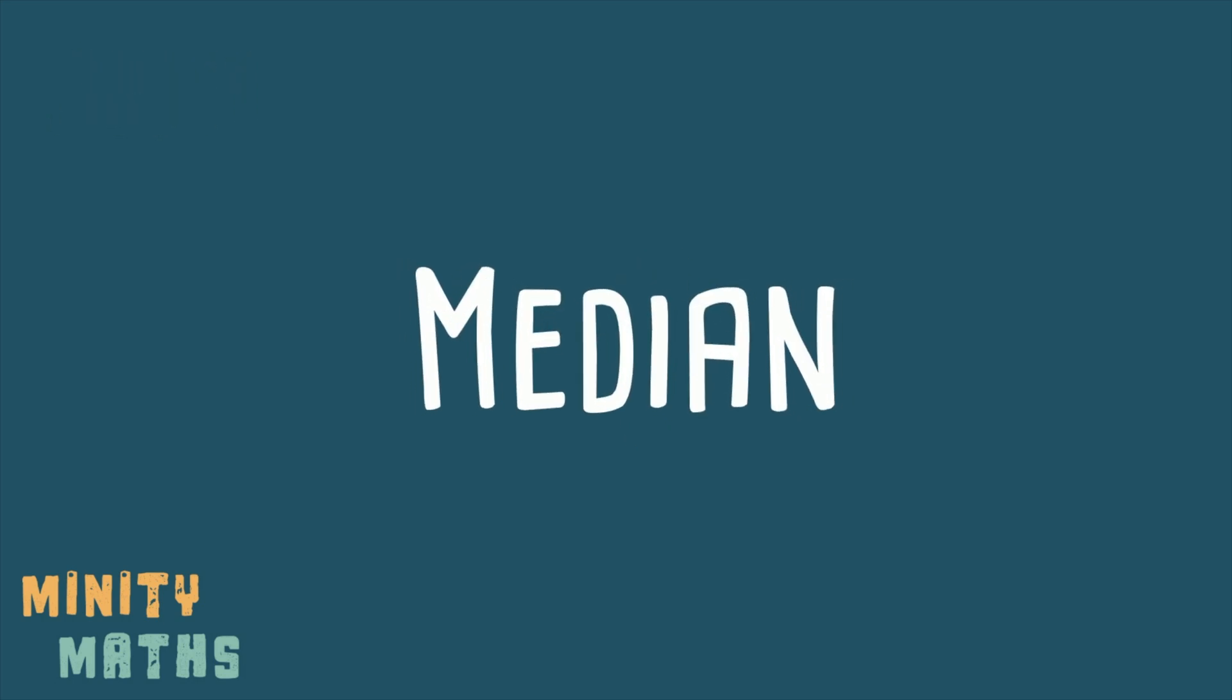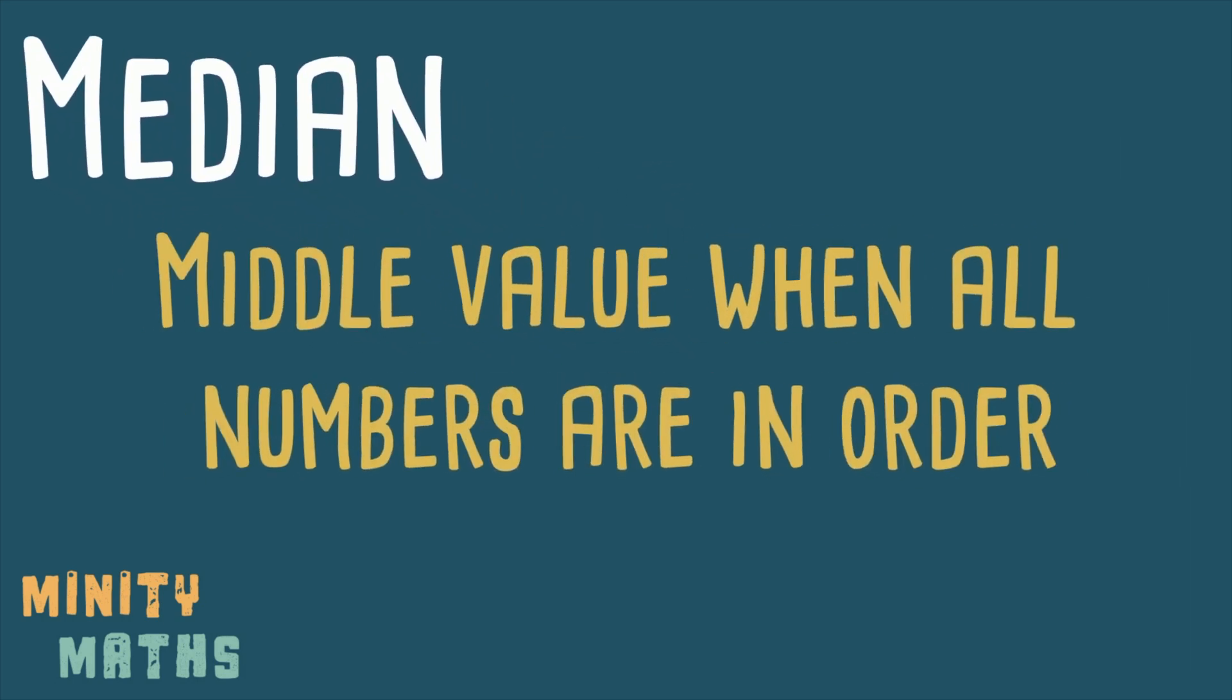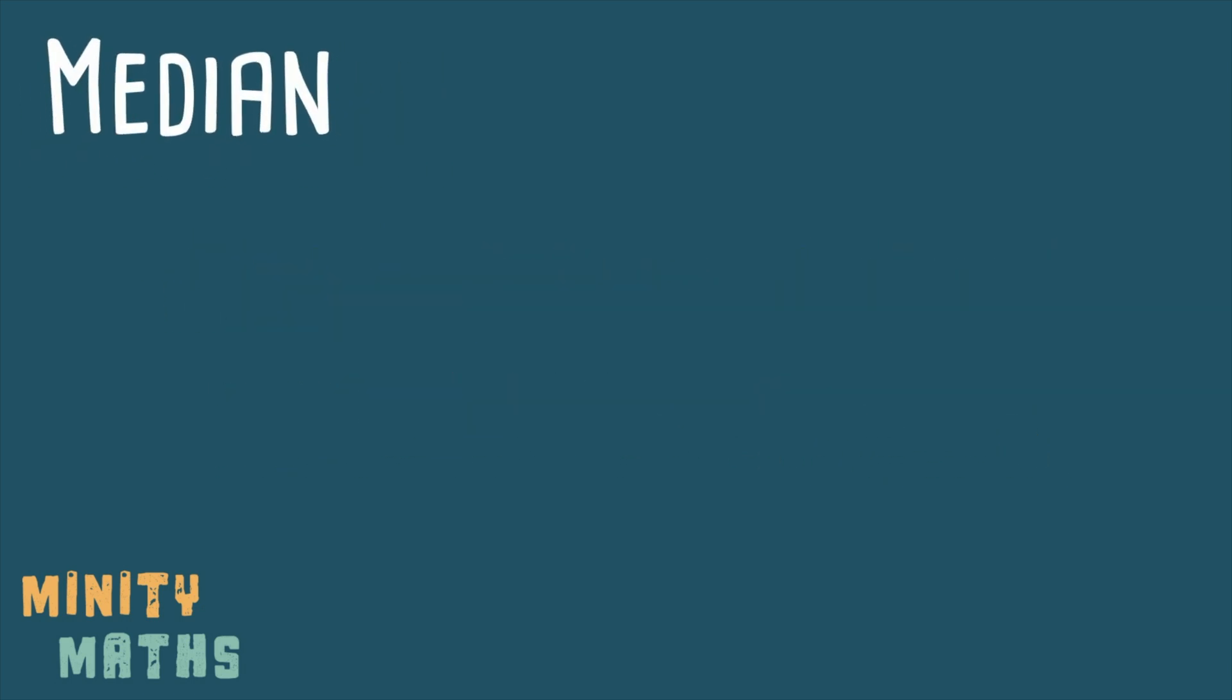Next is the median. This is the middle value when all of the numbers have been arranged in order. In this example the middle value is clear to see. However, in this example there are two middle values. In this case we add the two numbers together and divide by two to find the number that lies between these two middle values.